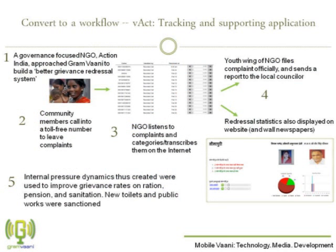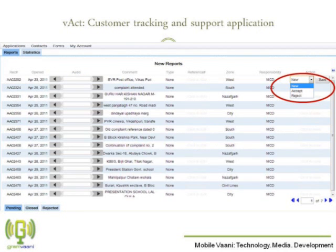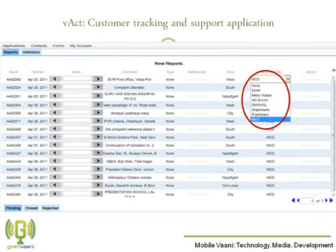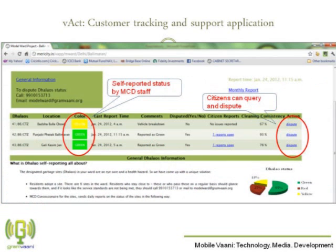Yet another powerful application we have is WeAct, through which you can track customer requests over time. Customers can call to record their messages or complaints, and the administrator can accept or reject these complaints. Accepted complaints immediately get an SMS back with the registration number. The administrator can also internally delegate the complaint to various stakeholders. All customer requests can be tracked over the web, and citizens can dispute the complaints in case they are not satisfied with the redressal provided by the agency.